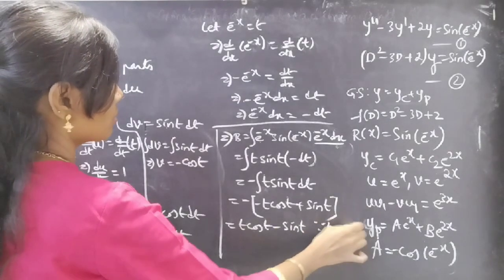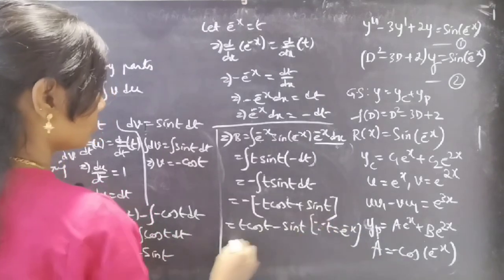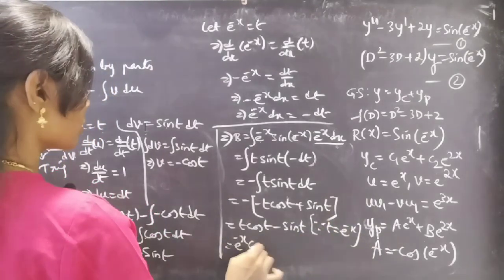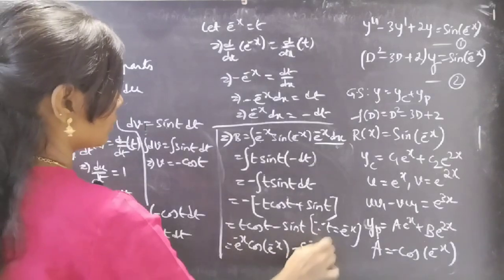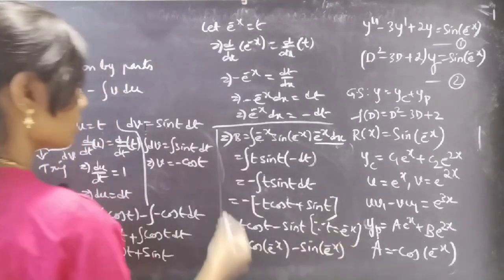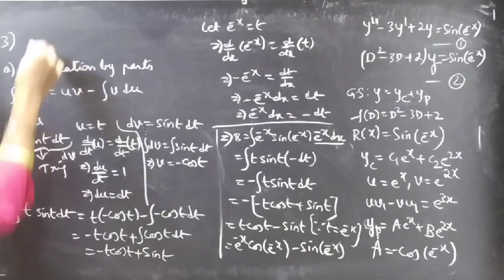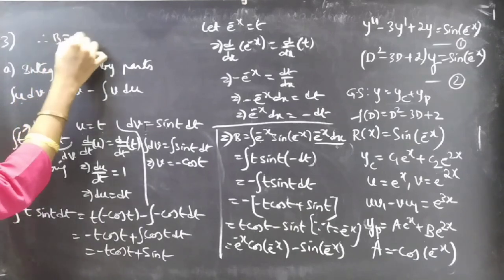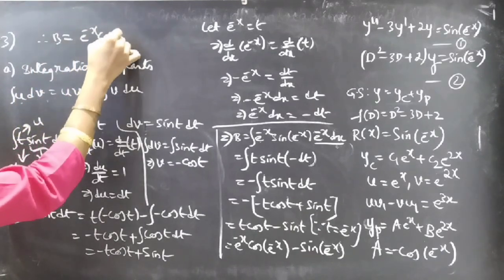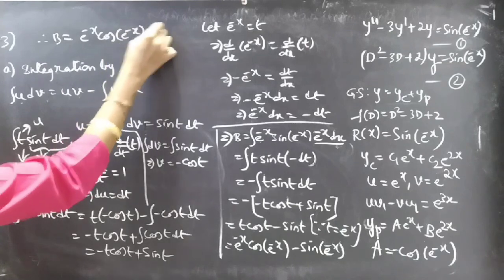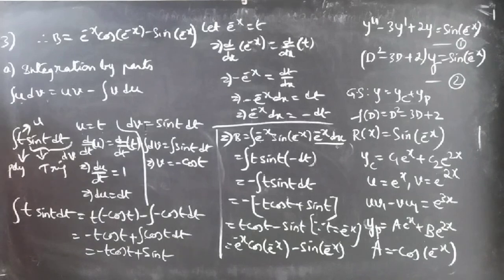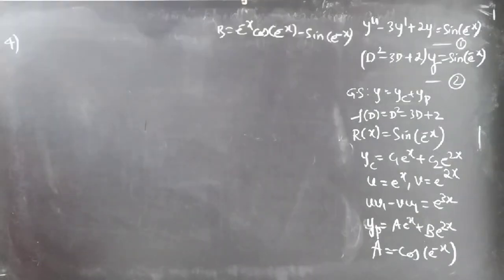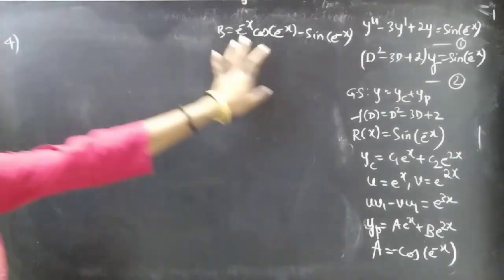Since t = e^(-x), replacing back: b = e^(-x)·cos(e^(-x)) - sin(e^(-x)). Therefore b = e^(-x)·cos(e^(-x)) - sin(e^(-x)).